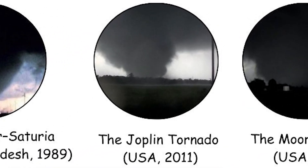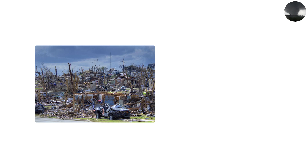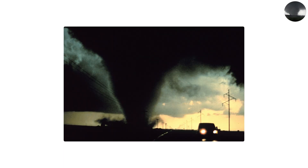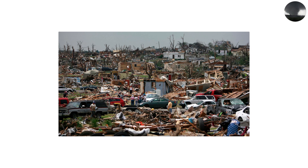The Joplin Tornado, USA, 2011. The city of Joplin, Missouri experienced one of the most devastating tornadoes in modern American history on May 22, 2011. In just 38 minutes, an EF5 tornado tore through the city, killing 158 people and injuring more than 1,000 others. It caused an estimated $2.8 billion in damages, making it the costliest tornado in US history.